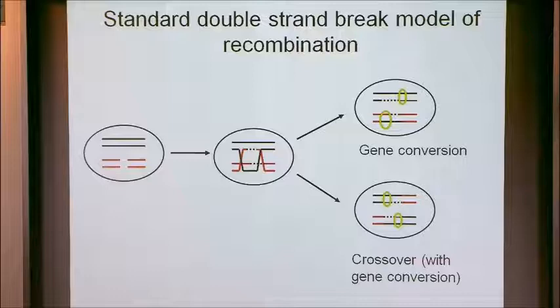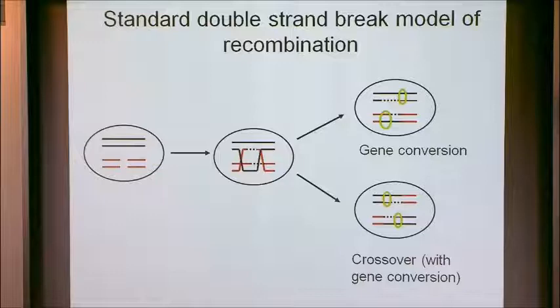The standard model is one where you have a double strand break in one chromosome, and there's some kind of strand migration. That junction moves around a bit and then gets resolved in two different ways. One is generally termed a crossover, which involves the reciprocal transport of a large stretch of DNA — you can see this descendant chromosome has a large bunch of red over here.